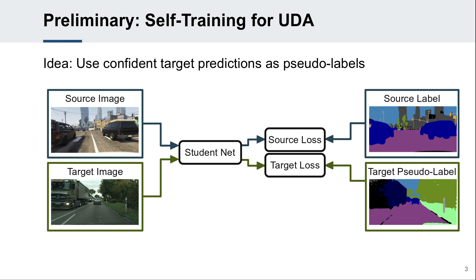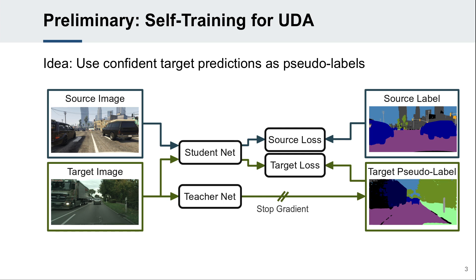Many state-of-the-art UDA methods are based on self-training. The network is trained using ground truth labels for source images and pseudolabels for target images. The pseudolabels are generated by taking confident predictions of a teacher. The teacher network is an exponential moving average of the student for temporally stable predictions. In that way, the networks are iteratively adapted to the target domain.